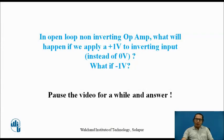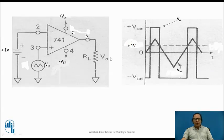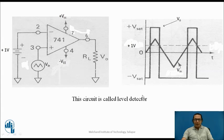You can pause the video and answer one question: in an open-loop non-inverting op-amp circuit, what happens if we apply +1 volt to the inverting input instead of connecting it to ground? You should now be able to draw the output waveform by applying the two golden rules. Instead of connecting the inverting terminal to zero, if I connect +1 volt there, the reference line shifts and the output waveform changes accordingly. This circuit is then called a level detector, because it detects a particular level of +1 volt, rather than zero-crossing.